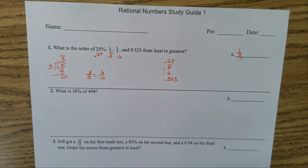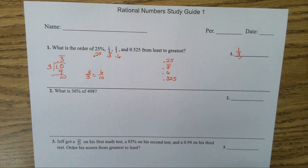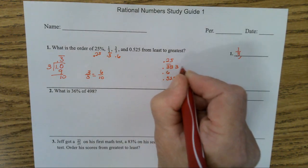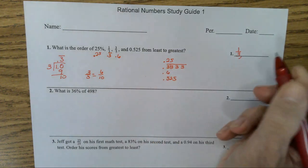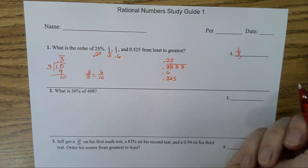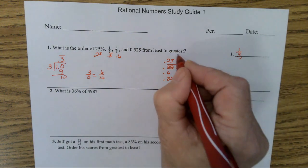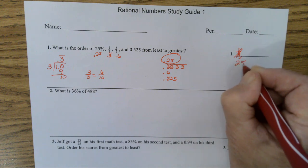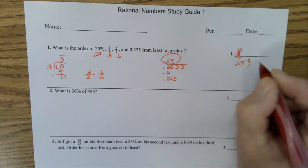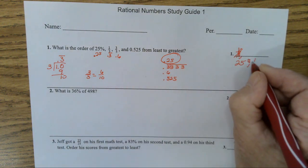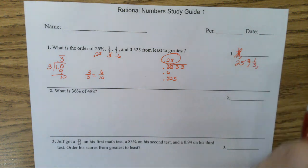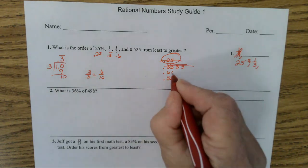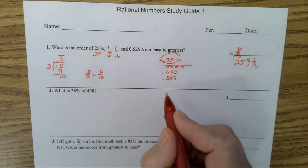Wait, no it's not, because that goes on and on forever. It's not 1/3. What's our smallest number up there? 25% is the smallest. Then it's 0.3 repeating, which is 1/3. What's the next to the biggest?